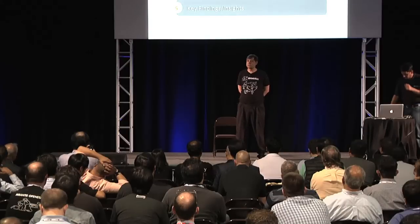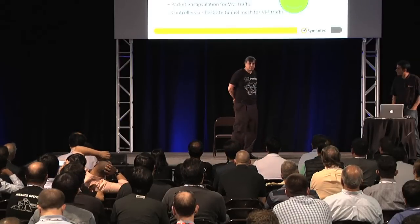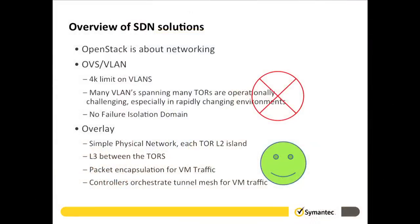I'm the chief architect at Mirantis, but they still let me play with hardware — it's a very fun job. We had a fundamental assumption that Neutron OVS VLAN would be the highest-performing SDN solution, so we used it as a baseline. What we discovered — as anyone who operates large L2 zones knows — is that L2 zones with multiple VLANs spanning many tiers is very painful. You spend most of your time debugging the network and very little time actually using the equipment. So: just say no.